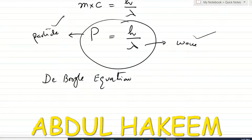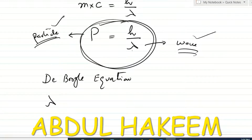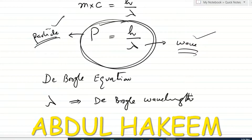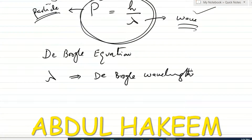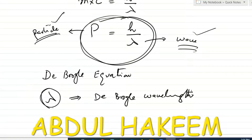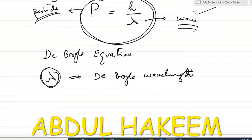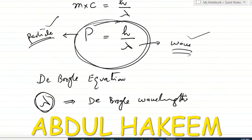The de Broglie equation proves that light has both particle and wave nature, and is a relation between the two natures. This wavelength λ in h/λ is called the de Broglie wavelength. It is the wavelength of a particle which is converted into a wave, or the wavelength of a wave that can be converted into a particle. This equation is also called the bridge equation between particle nature and wave nature.